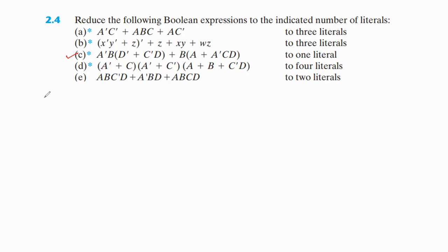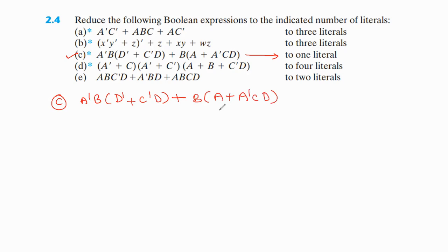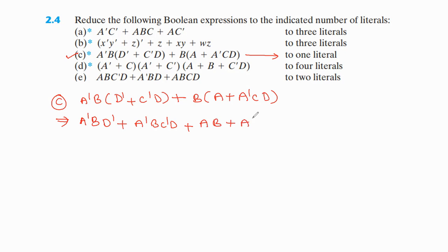Now let us move to part C. Part C has to reduce to only one literal. The given expression is A'B(D' + C'D) + A'BCD. We should simplify A'B(D' + C'D) — just multiply it out.